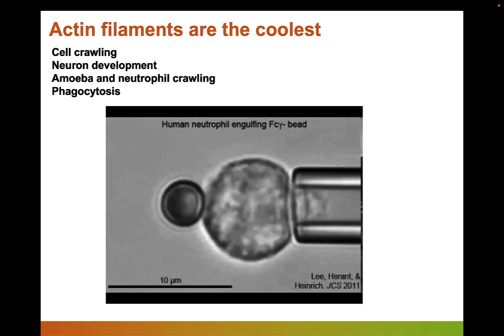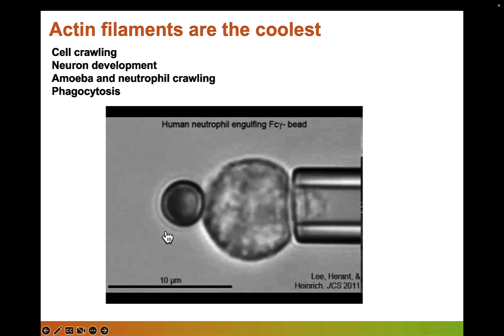The last video I'll show is a neat experiment done by the Heinrich Lab using molecular tweezers — a pipette tip that can hold onto a neutrophil. They put a small bead covered with antibody, and antibodies are like a signal that tells white blood cells to engulf whatever is coated with them. They fed this antibody-coated bead to the neutrophil they were holding, demonstrating phagocytosis.